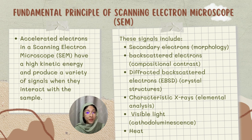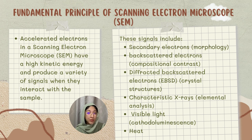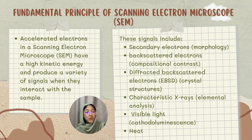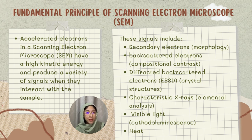The fundamental principle of the scanning electron microscope: accelerated electrons in the SEM have high kinetic energy and produce a variety of signals when they interact with the sample. These signals include secondary electrons, which reveal morphology; backscattered electrons; diffracted backscattered electrons; characteristic X-rays; visible light; and heat.